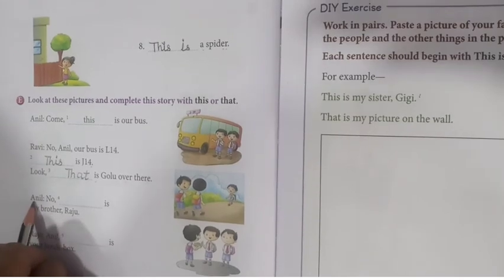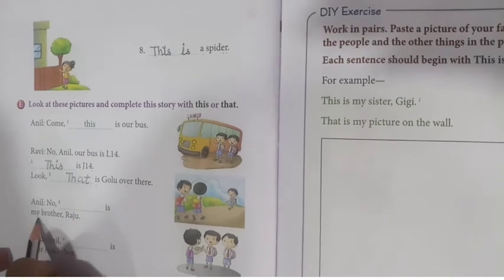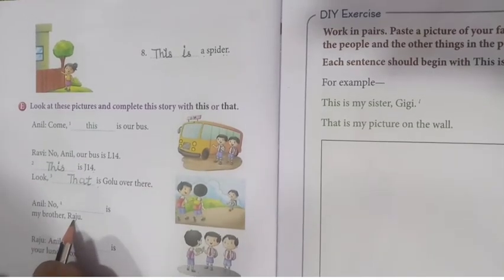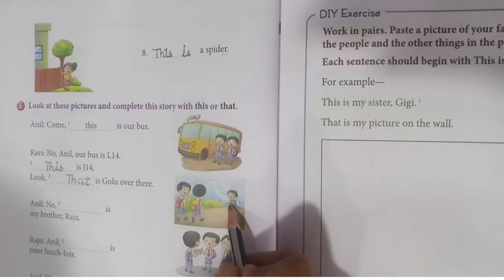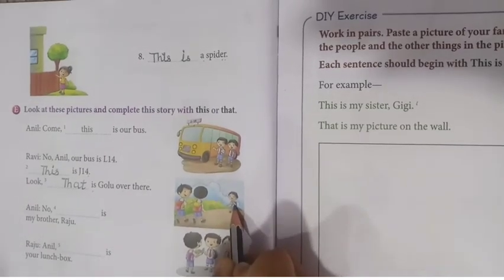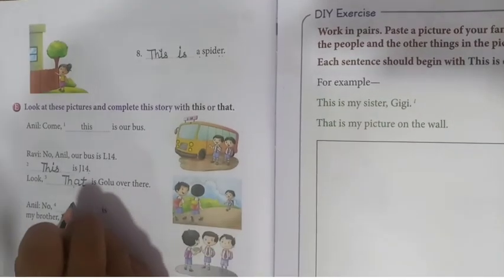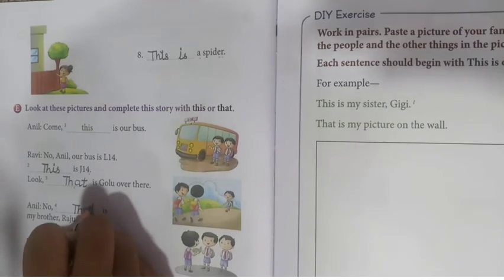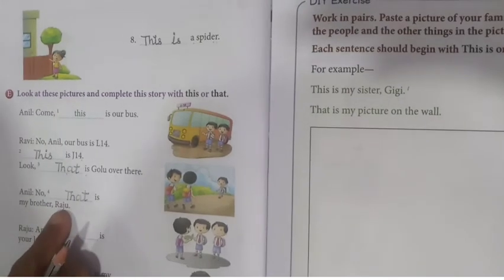Ab, Anil kya kya raha hai? 'No, dash is my brother Raju.' Anil ne kya kaha? Golu nahi hai — woh mera bhai hai Raju. It is far away — yaan par bhi hum ne likha 'that.' So, hum kya likhenge? 'That.' That is my brother Raju.